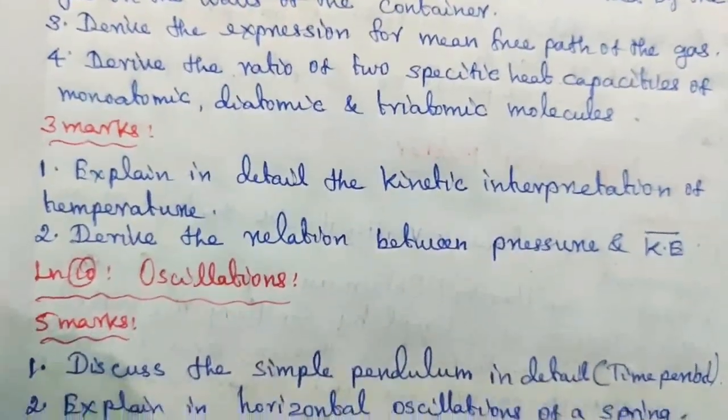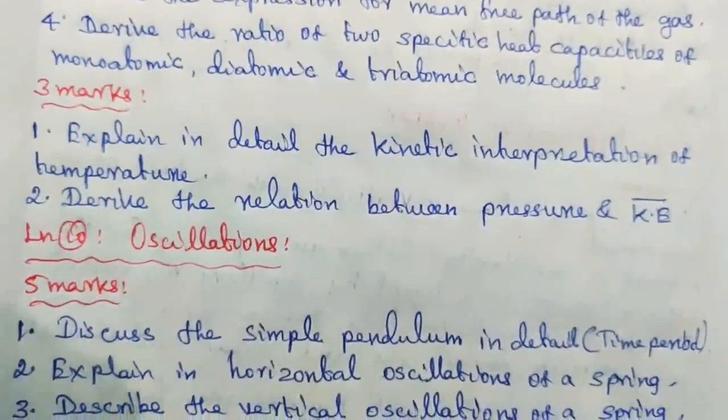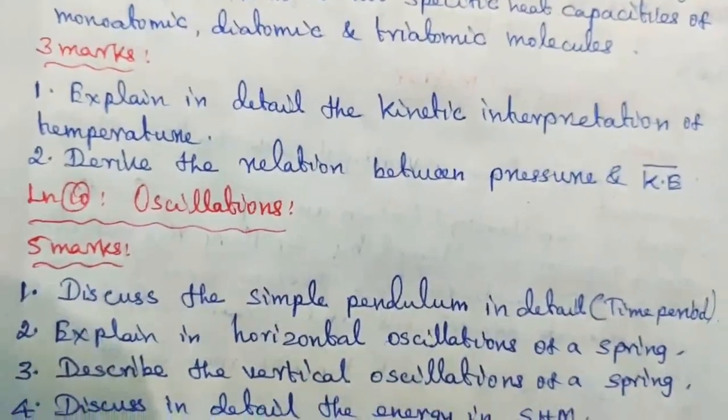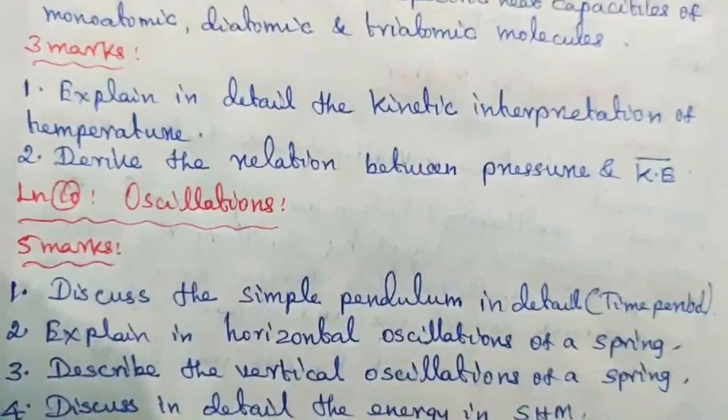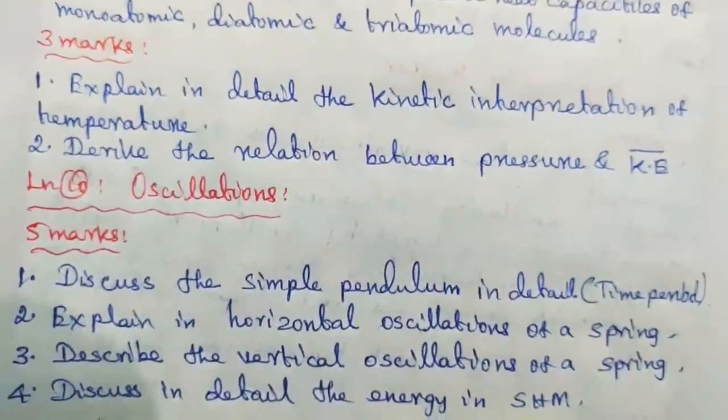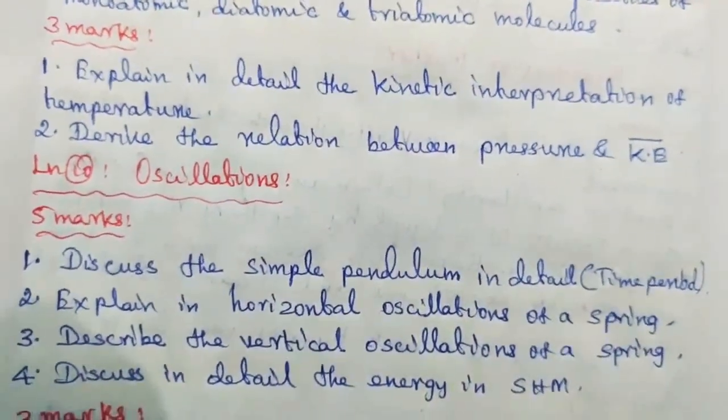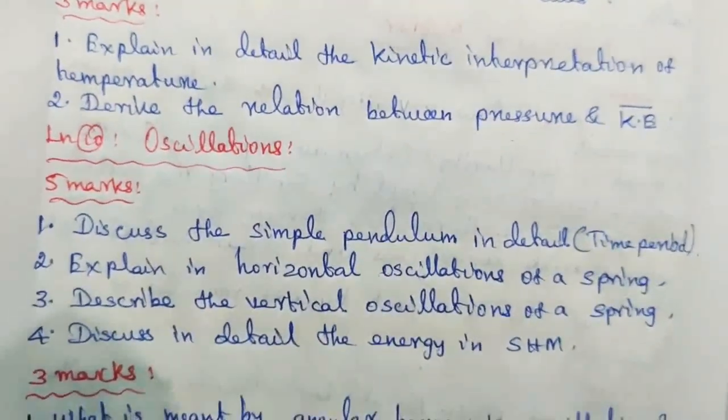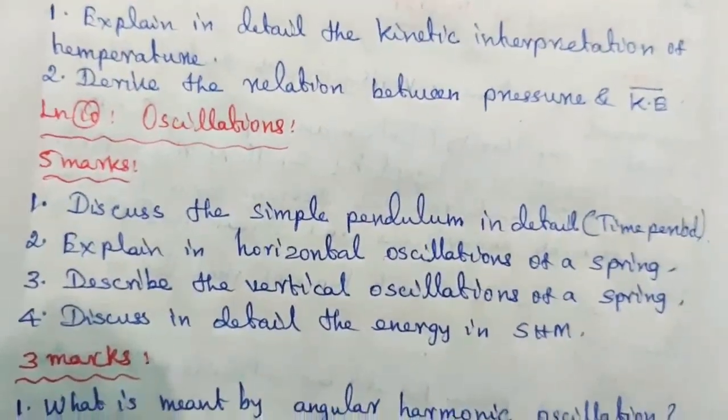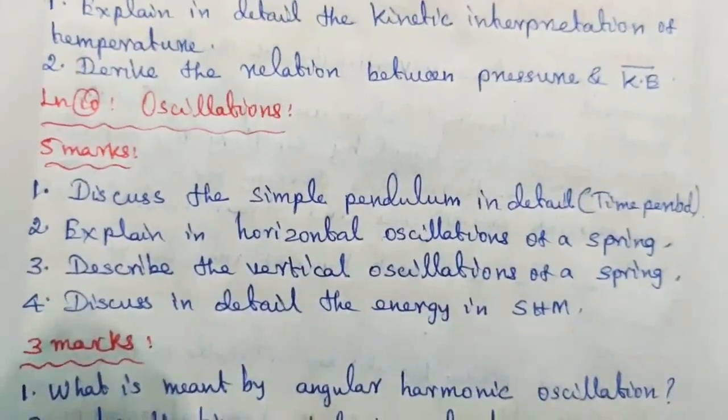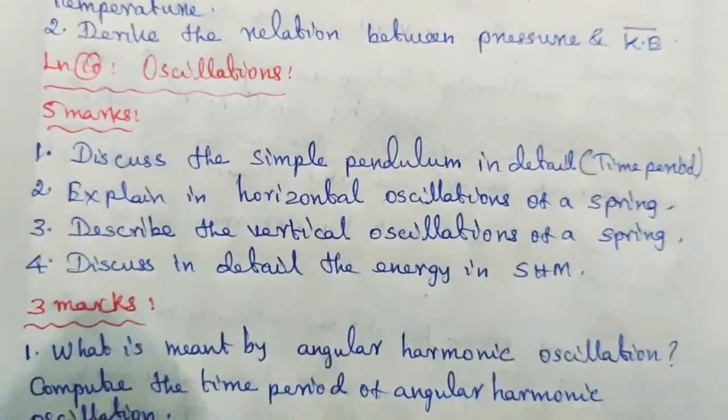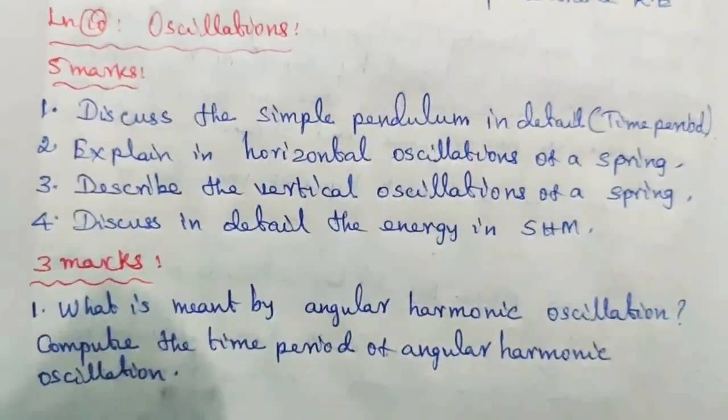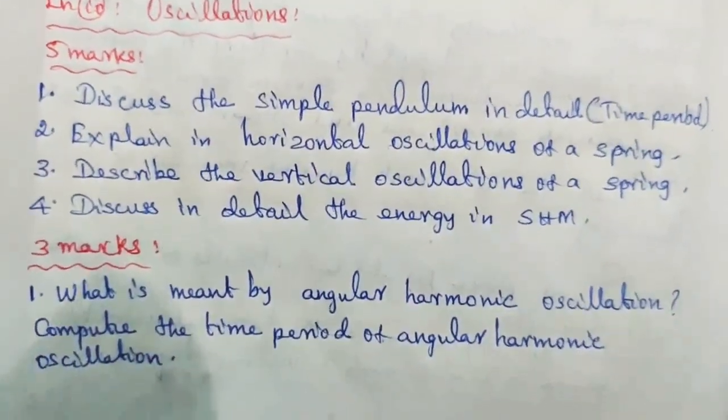Five mark questions. Question number 1: Discuss the simple pendulum in detail time period. Question number 2: Explain the horizontal oscillations of a spring. Question number 3: Describe the vertical oscillations of a spring. Question number 4: Discuss in detail the energy in SHM. SHM means simple harmonic motion. Three marks. Question number 1: What is meant by angular harmonic oscillation? Compute the time period of angular harmonic oscillation.